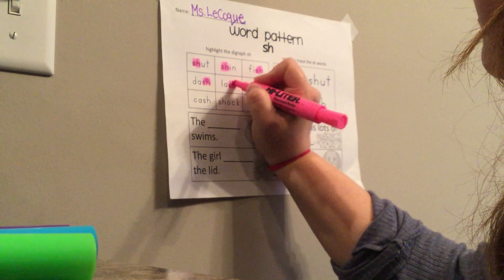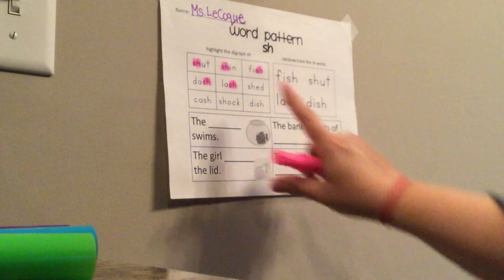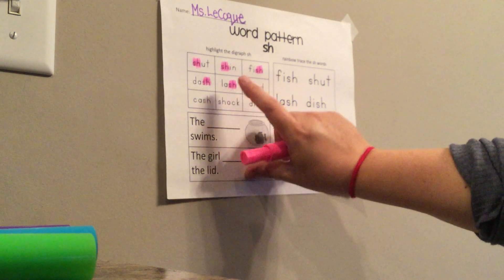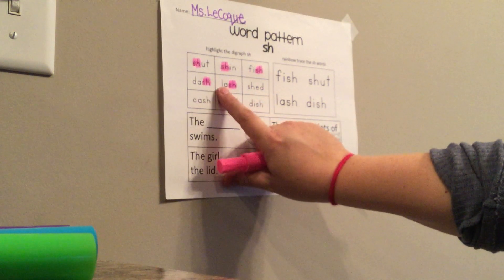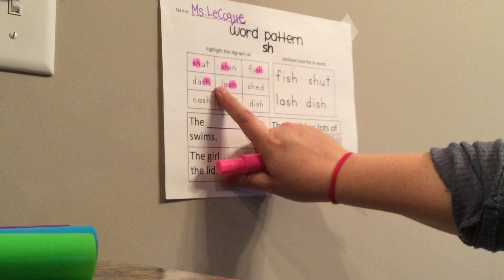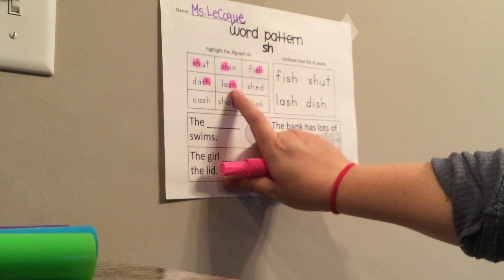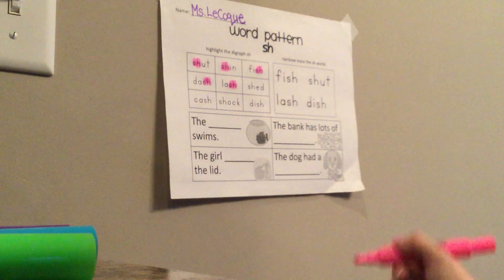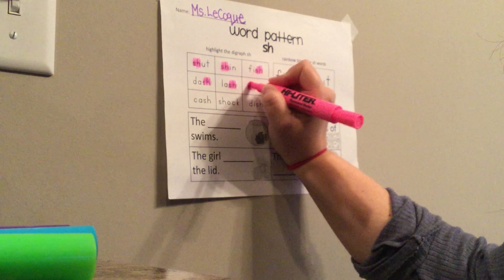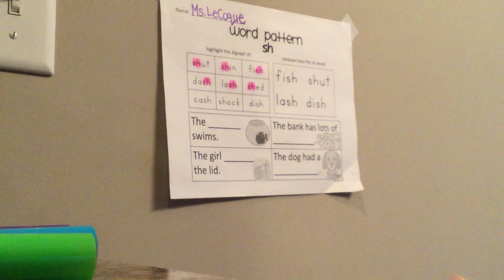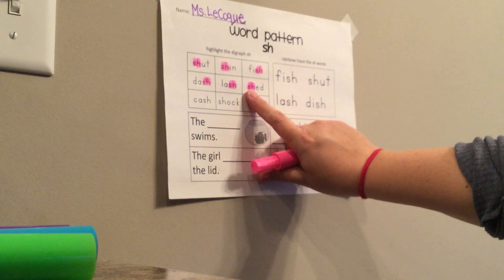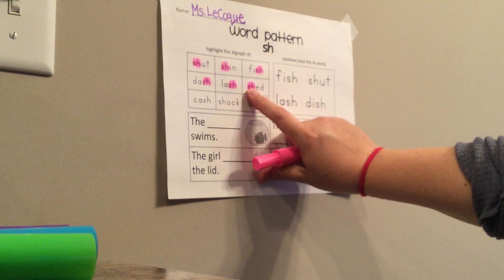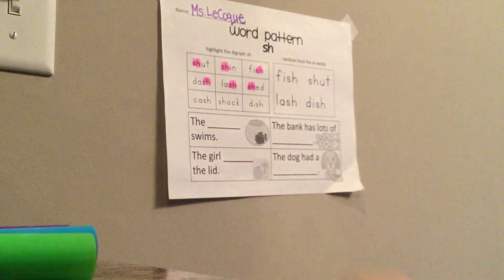Go ahead and highlight the next 'sh'. Where is it in the word — is it at the beginning or the end? Yes, it's at the end. Get your finger ready; we always start with the first letter: l, ah, sh. L, ah, sh. Nice job. Highlight again the next 'sh' in the word. Get ready, say it with me, get your finger ready: sh, eh, d. Sh, eh, d. Nice job.